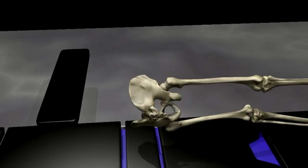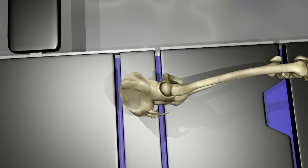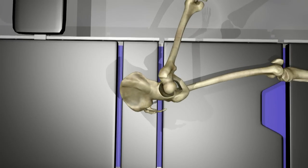The thigh is moved in such a way as to pull the femoral head, the ball, out of the acetabulum, the socket. The arthritic femoral head is then removed.